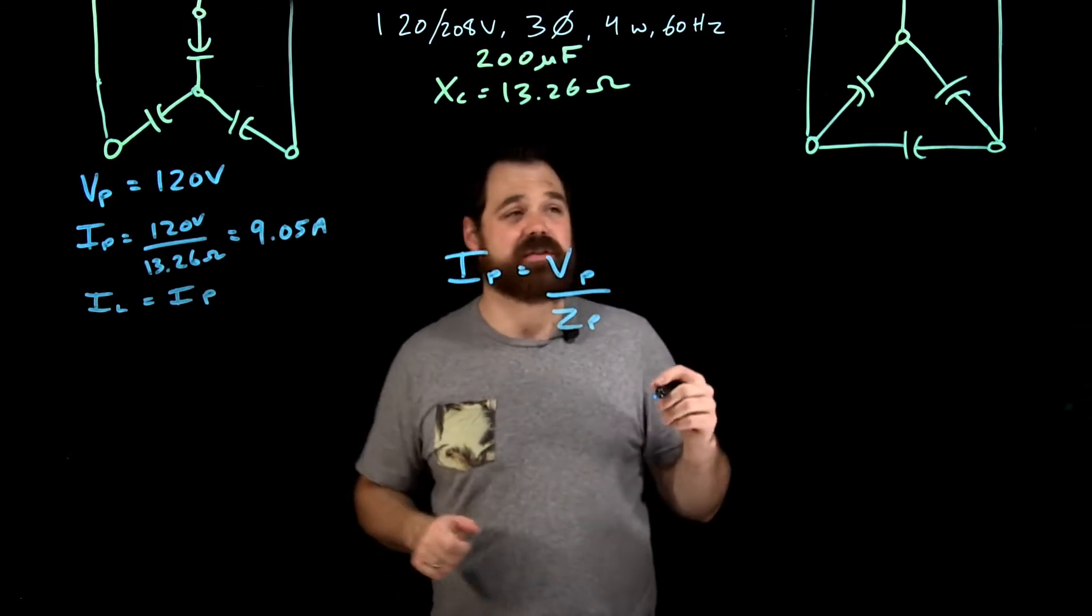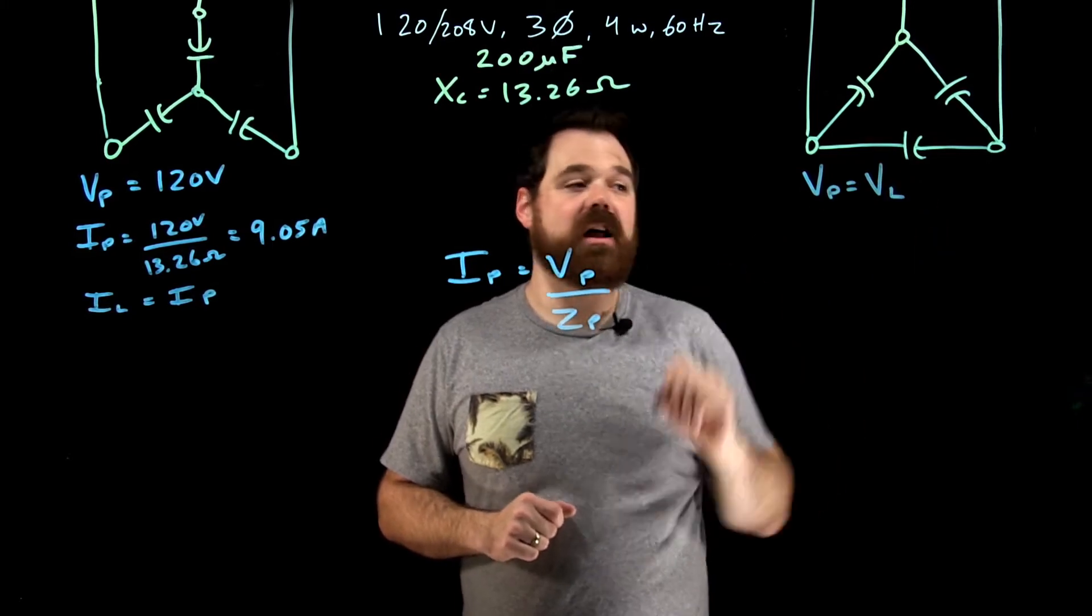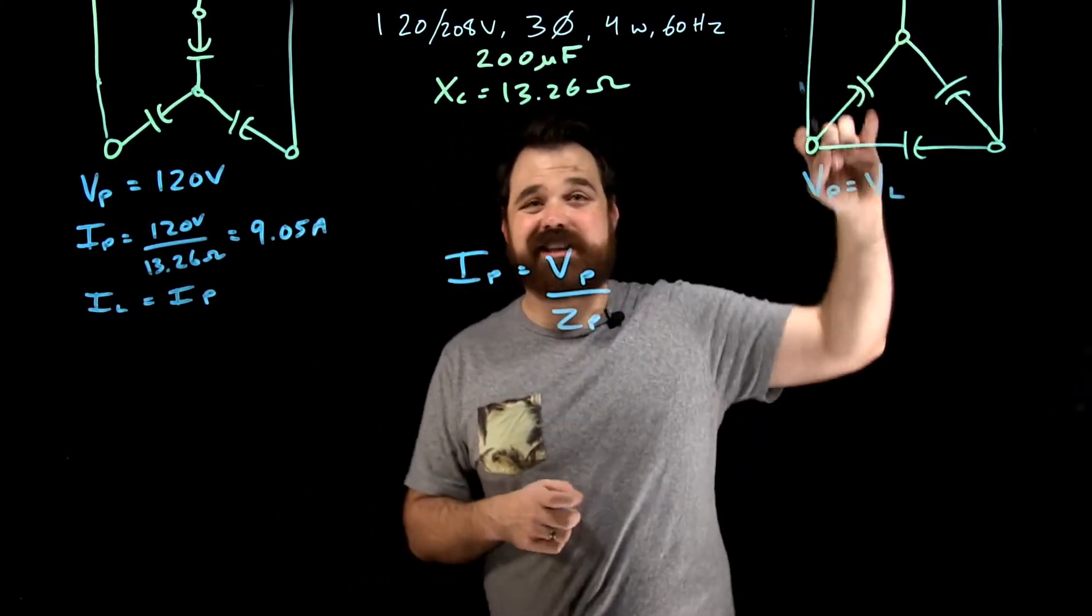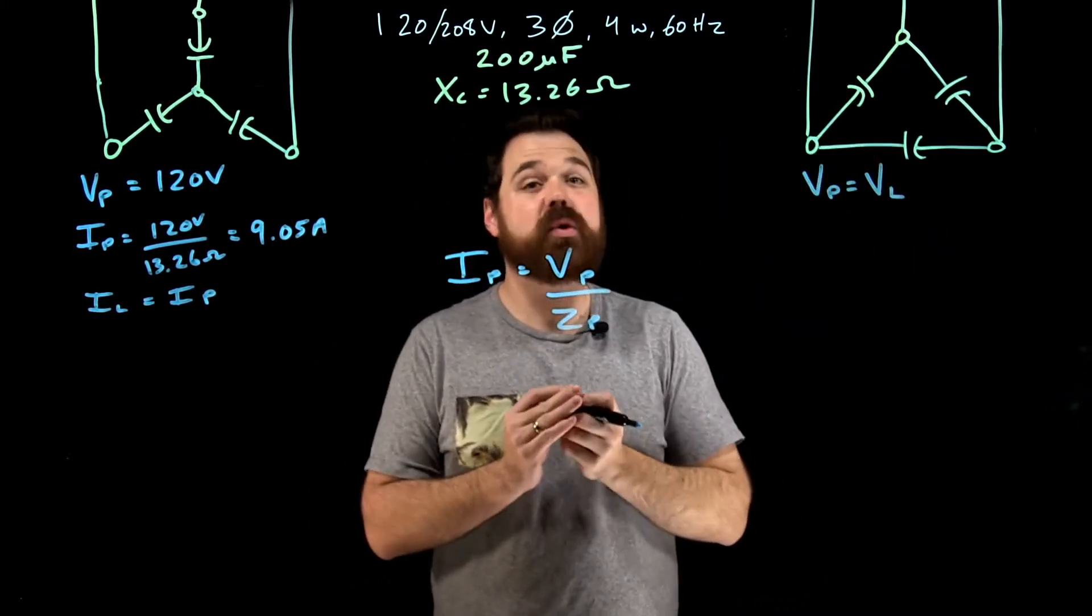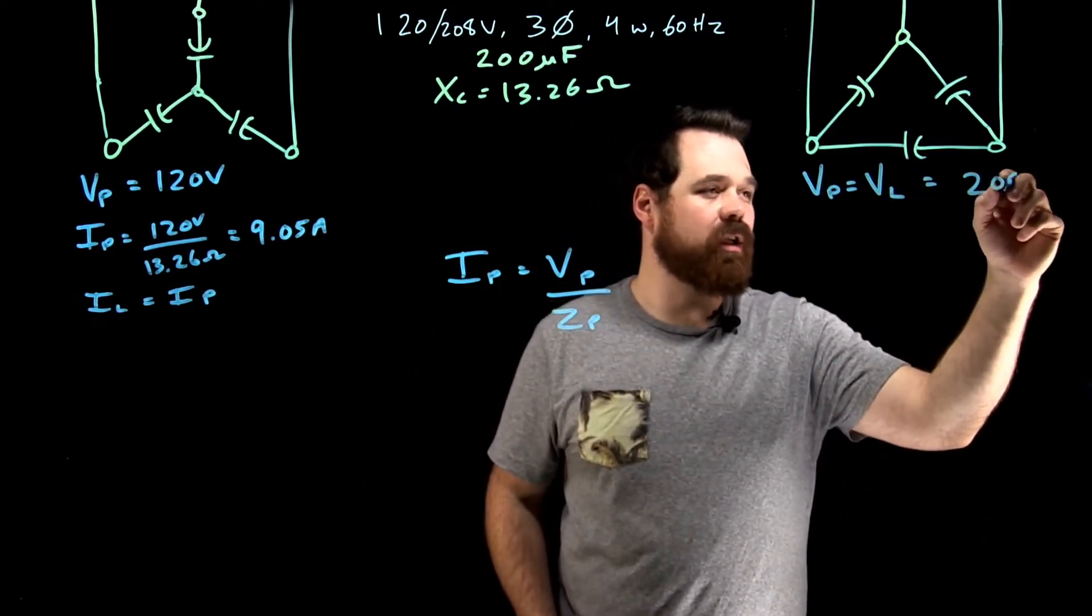We'll do the exact same thing with the delta. So over here, we know that V phase actually equals V line. In a delta circuit, they are the same. The phase voltage and the line current or voltage are the same. So over here, it will be 208 volts.